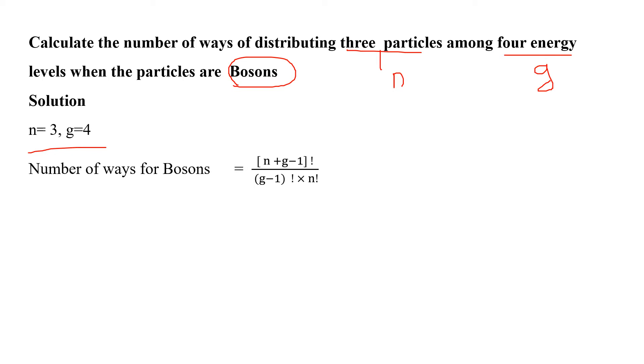Now we substitute the values. n value is 3, so we have 3 plus 4 minus 1 factorial divided by 4 minus 1 factorial into 3 factorial. This gives us 6 factorial divided by 3 factorial into 3 factorial.